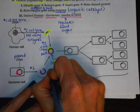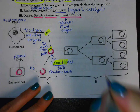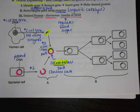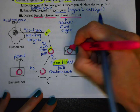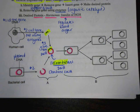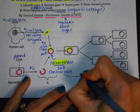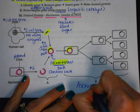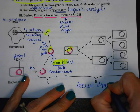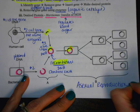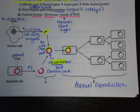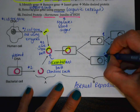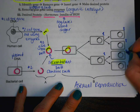After combining the DNA, the next step is to put it back into that bacterial cell. That bacterial cell is now really good at making more copies of itself using asexual reproduction. If it asks for the type of cell division, it would be mitosis. If it asks for the type of reproduction, it's asexual. Asexual makes an exact copy, which means every single one of these bacteria is capable of making the new protein.